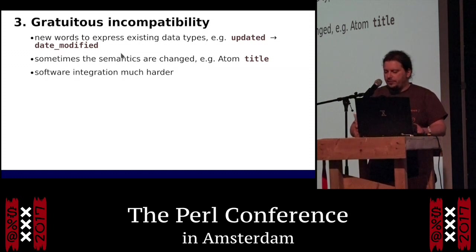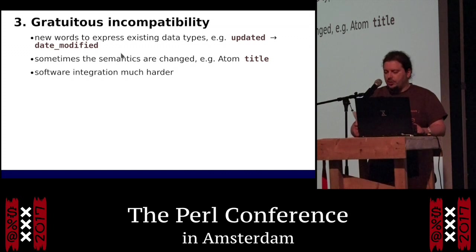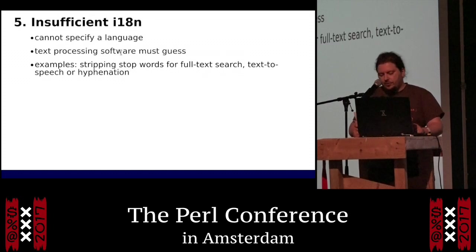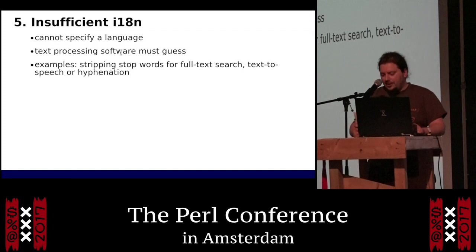Number three — gratuitous incompatibility: the authors came up with completely new words to express existing data types. For example, the field 'updated' is now called 'date_modified'. These changes are uncalled for with no justification. Sometimes the semantics are changed incompatibly — for example, the title in an Atom feed can be plain text, HTML, or XHTML, but in JSON Feed it must be plain text. Number four — lack of discovery: JSON Feeds are not discoverable, so browsers and feed readers can't automatically find feeds from a homepage. Number five — insufficient internationalization: you cannot specify the language for individual feed entries, so text processing software must guess using heuristics — a Greek word that means 'sometimes wrong'. Examples include full-text search stop words, text-to-speech, or hyphenation.